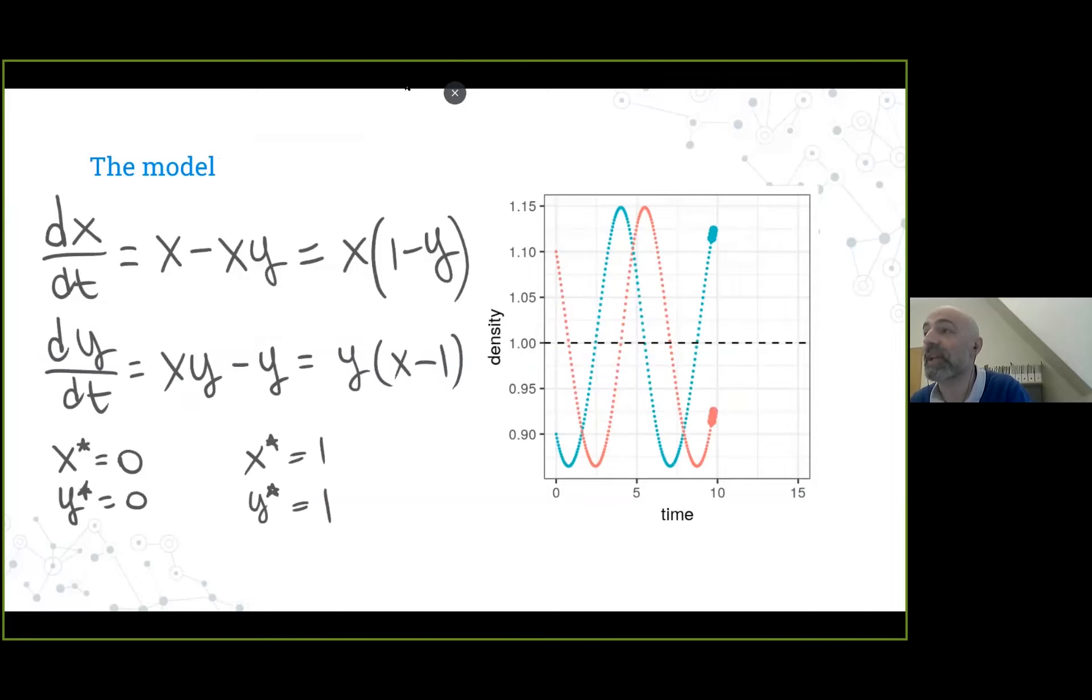He wrote the famous equations, reported here in their simplest form. The prey is in blue in this slide, the predator is in red. The prey would grow exponentially if left alone without the predator. Similarly, the predator would die exponentially fast if left alone without the prey. But because the two species interact, they can coexist.